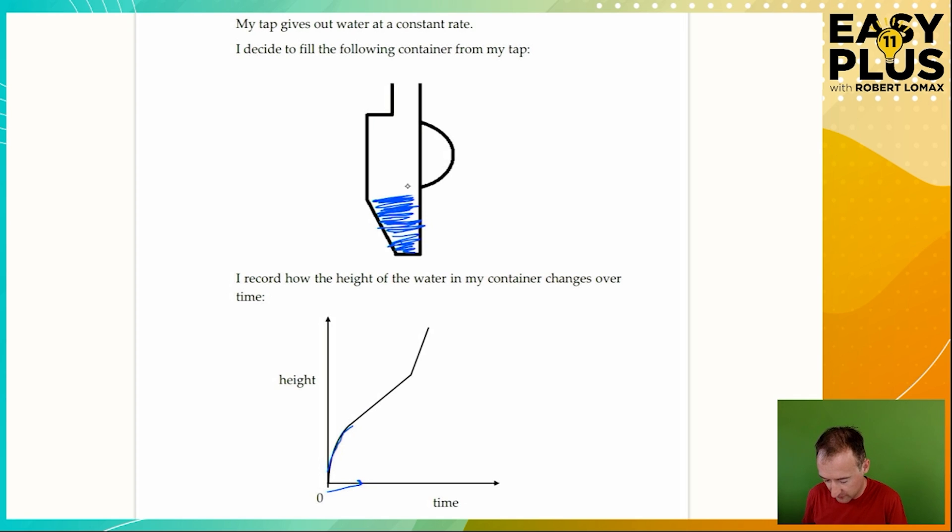Then the water reaches this part here. And this part is consistent in its width all the way up. So as long as the water's coming in at a consistent rate the container is going to fill at a steady speed. So as the time increases the height increases steadily. It doesn't increase more slowly or more rapidly.